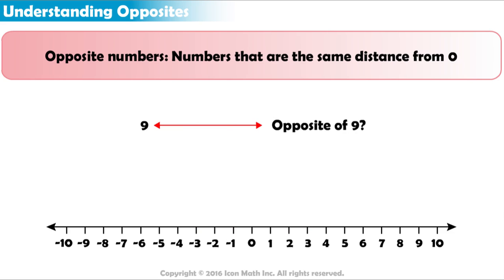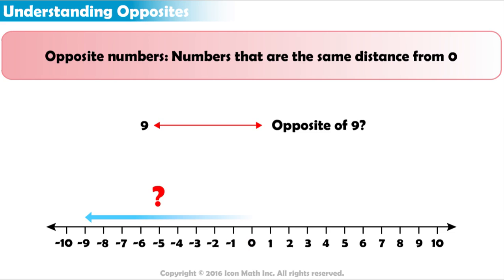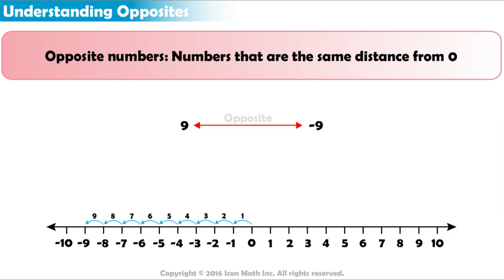What number is the opposite of 9? The opposite of 9 is the number that is also 9 away from zero, going the opposite direction on the number line. Starting at zero and going to the left, what number is 9 away from zero? 1, 2, 3 through 9 — 9 places to the left of zero is negative 9.